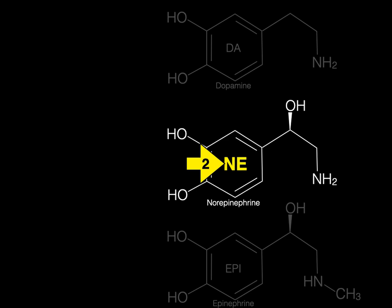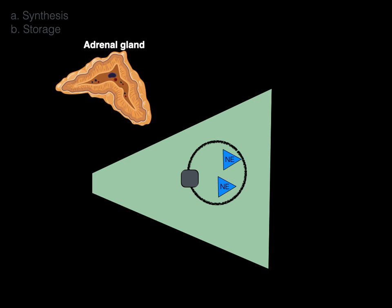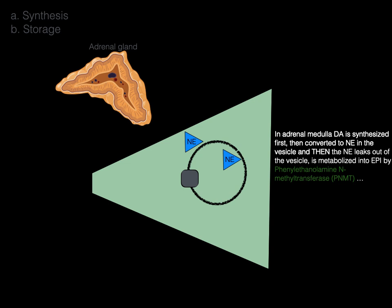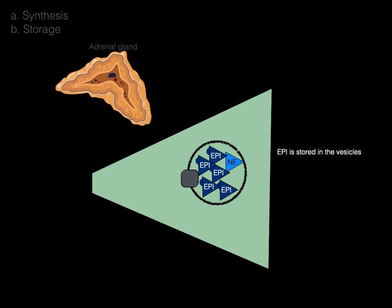Once we've made norepinephrine, we can synthesize epinephrine. This occurs in the adrenal gland, specifically the adrenal medulla in those chromaffin cells. Dopamine is synthesized first and converted into norepinephrine in the vesicles. Then norepinephrine leaks out of the vesicle and is metabolized into epinephrine by phenylethanolamine N-methyltransferase, or PNMT. VMAT then transports the epinephrine back into the vesicles. About 80% of norepinephrine in the adrenal medulla is transformed into epinephrine, which is why 80% of the catecholamines secreted by the adrenal medulla is epinephrine.